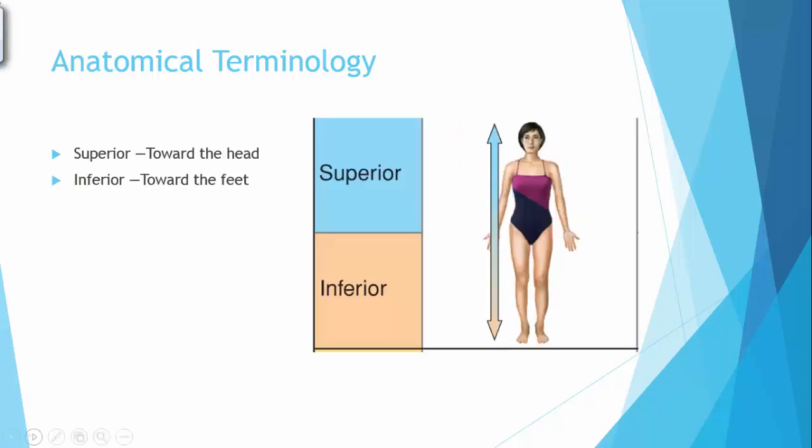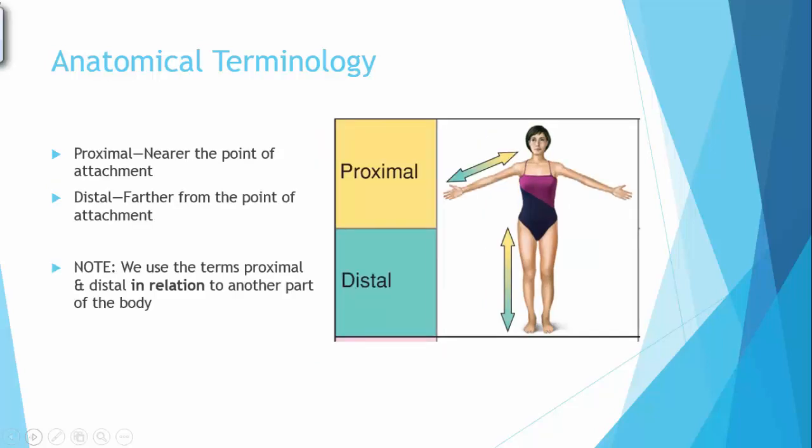I assume that you understand what superior and inferior means, but just in case you need a refresher, superior is going to be going up towards the head, inferior is going to be going down towards the feet in the anatomical position. So your head is superior compared to your shoulder, your knees are inferior compared to your hips. A lot of times when we use anatomical terminology, we're going to use comparisons. So it's not just simply this is this direction, it's this is this direction in relation to this other part.